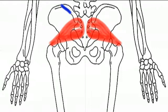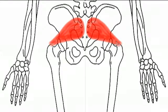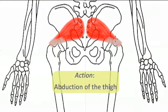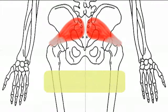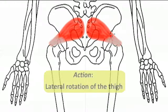This broader, rounder, and wider origin belly is in contrast to the more slender insertion belly. Its actions include abducting the thigh and laterally rotating the thigh at the hip joint, and this action is the same as the other three muscles featured in this podcast.